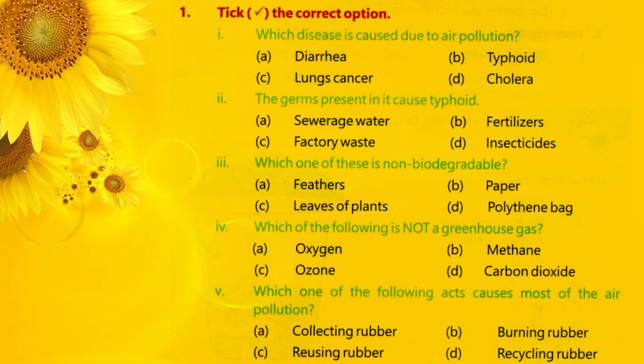Question 5: Which one of the following acts causes most of the air pollution? Options: A. Collecting rubbers, B. Burning rubbers, C. Reusing rubbers, D. Recycling rubbers. Correct option is B — Burning rubber.